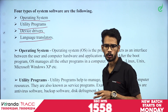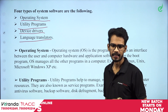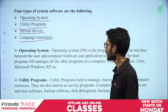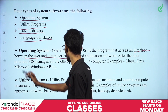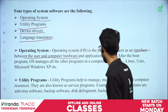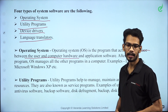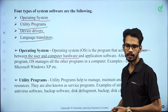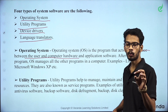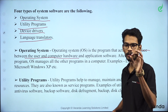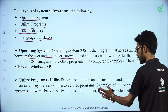OS is the operating system. What do you do with the computer? You do it through the OS. There is an interface for users — it is between the computer hardware and the user. It is an interface for the operating system. The OS provides an interface for users and computer hardware.